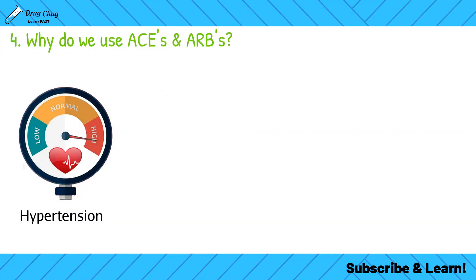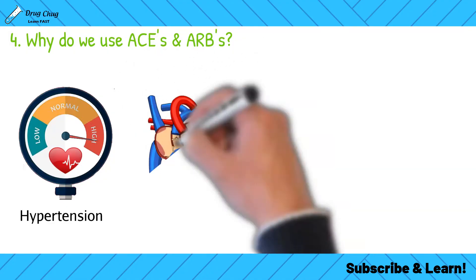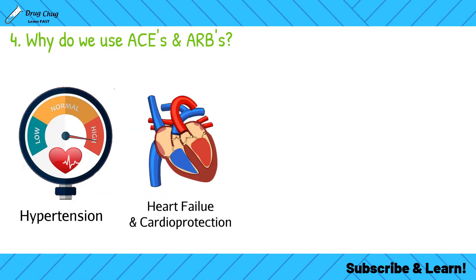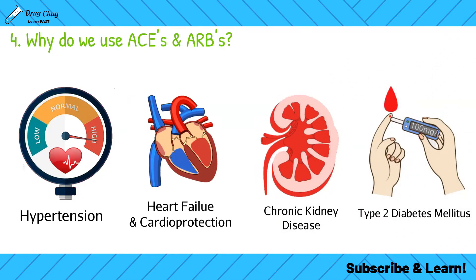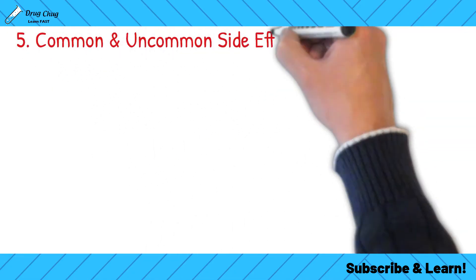Who do we use ACE inhibitors and ARBs on? First, hypertensive patients with high blood pressure. Second, patients with heart failure or who need cardioprotection. Third, patients with chronic kidney disease — ACEs and ARBs are actually kidney-protective. Finally, type 2 diabetic patients, because excess blood sugar damages the kidney over time, and ACE/ARB drugs help protect it.